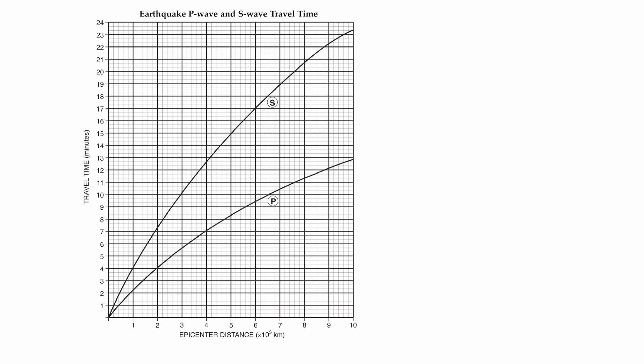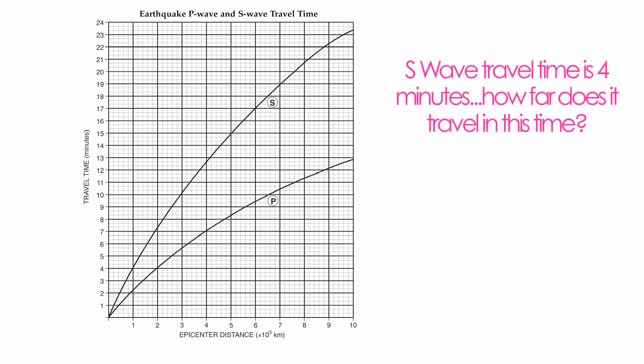Here are a couple of examples on how to use this chart. Identify keywords like travel time, arrival time, and origin time, and figure out what is given to you that you can get directly off the chart. For instance, if the S-Wave travel time is four minutes, how far does it travel in that time? Your keyword there is travel time. You find four minutes on the vertical axis, follow it over to your S-Wave, then follow it down — it turns out to be about a thousand kilometers.